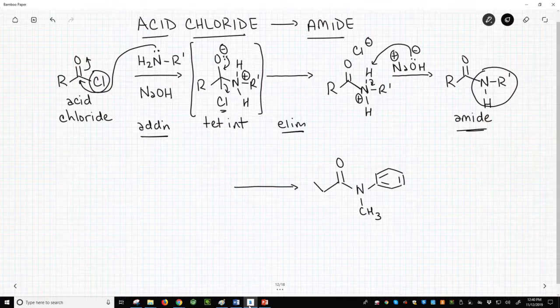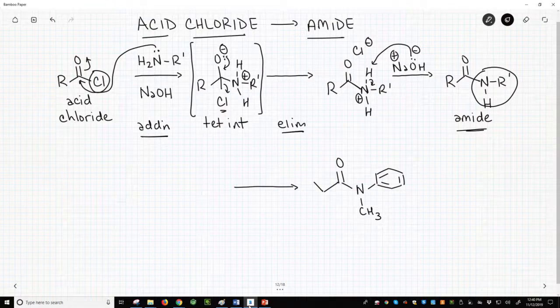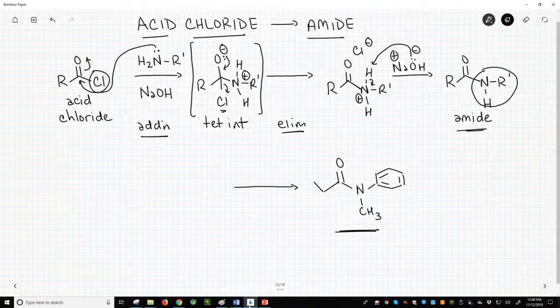Let's see a sample reaction. What amine and acid chloride would we need to make the amide on the bottom row? The R group of the acid chloride would need to be an ethyl.